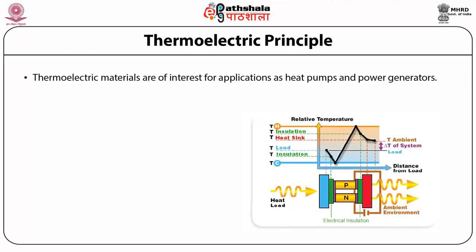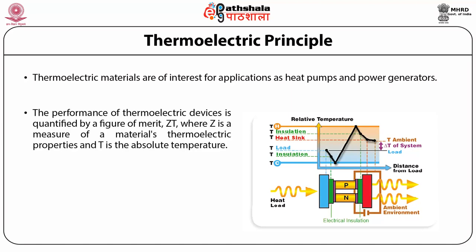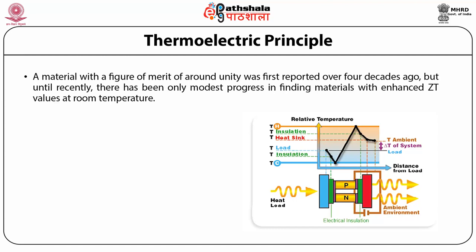Thermoelectric materials are of interest for applications as heat pumps and power generators. The performance of thermoelectric devices is quantified by a figure of merit ZT, where Z is a measure of a material's thermoelectric properties and T is the absolute temperature. A material with a figure of merit of around unity was first reported over four decades ago, but until recently there has been only modest progress in finding materials with enhanced ZT values at room temperature. The figure shown here presents the schematic diagram of thermoelectric voltage generation, where a heat load at one end with a P-N junction produces a voltage at the other end.